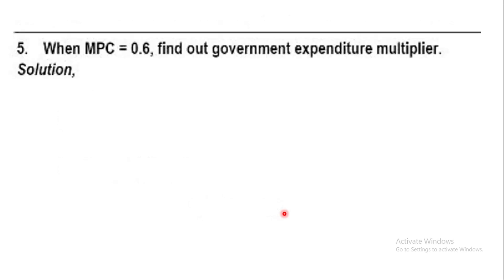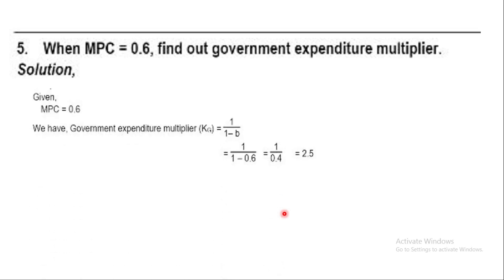Question 5: MPC = 0.6. The formula is K = 1 upon (1 minus MPC) = 1 upon (1 minus 0.6) = 1 upon 0.4 = 2.5. This is the answer.